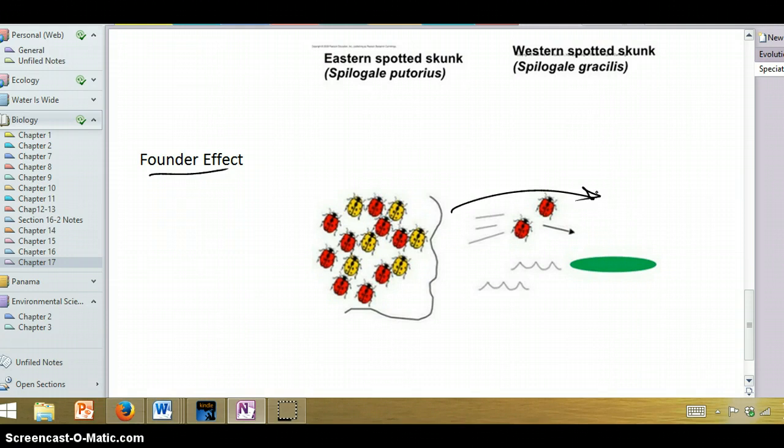If it just so happens to be, in this case, only red ones, then they are the founders of this new population. Their gene pool is different from the original population, and so at the beginning they will have a gene pool that's not representative of their original population. The distribution of phenotypes is not the same.